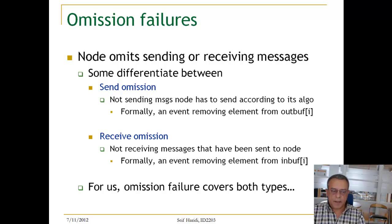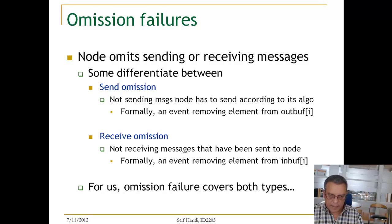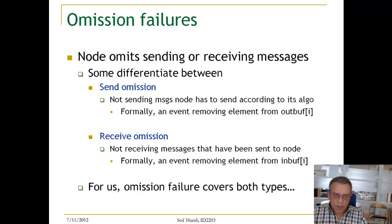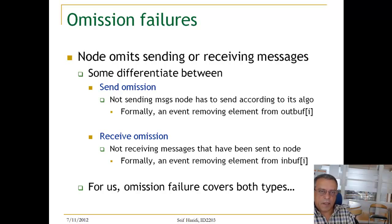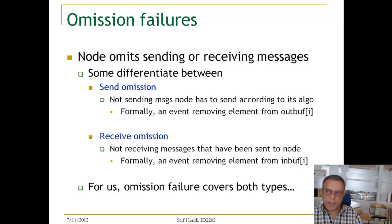Omission failure is a failure where a node omits sending and receiving messages. One can have what is called send omission, where the node is working as the algorithm specifies but omits sending messages — meaning messages are actually removed from the output buffer of that process or node. Receive omission means that a message arrives to a process in its input buffer but somehow it is removed. We call these types omission failure, and we will not address omission failure much in this course.